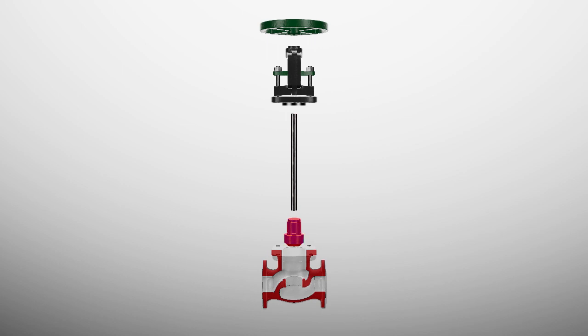The plug seals and blocks flow. The bonnet seals the stem against leaks and allows for mounting an actuator.